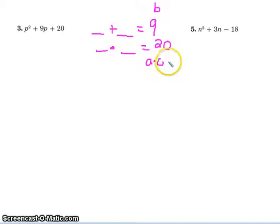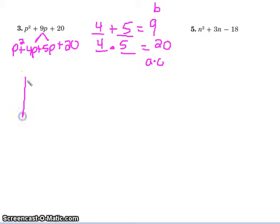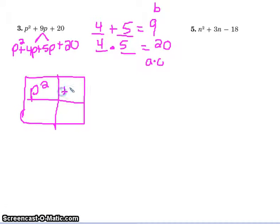4 plus 5, is that what you got? 4 and 5. And so that means that p squared plus 4p plus 5p plus 20, right? So inside my box is going to go p squared plus 4p plus 5p.